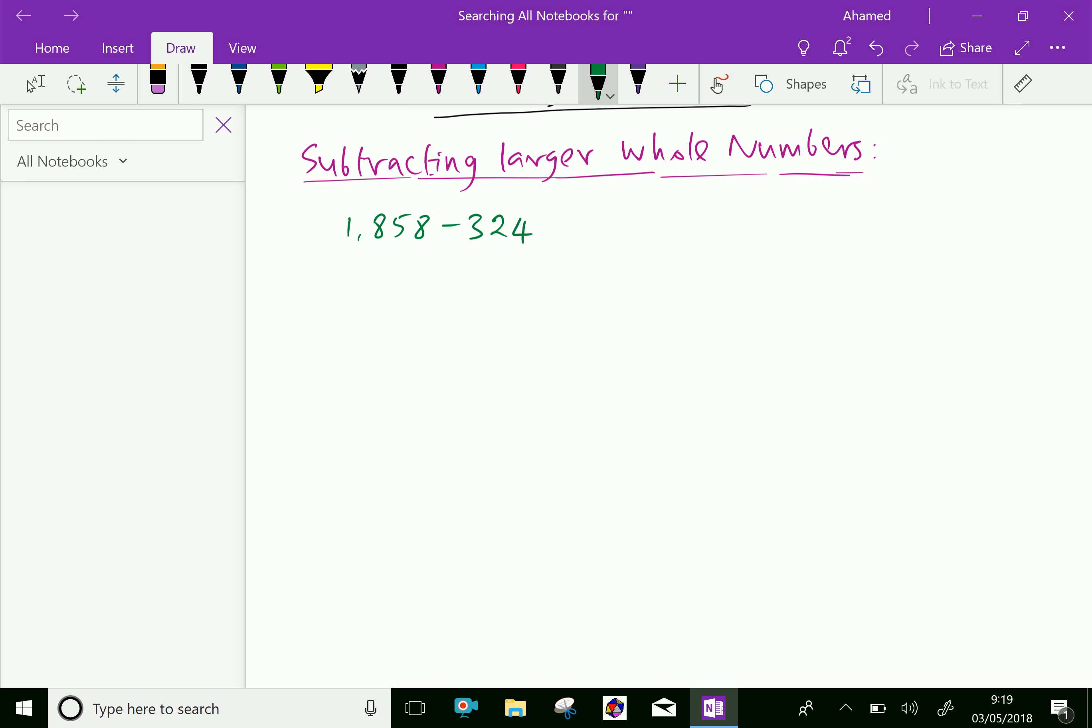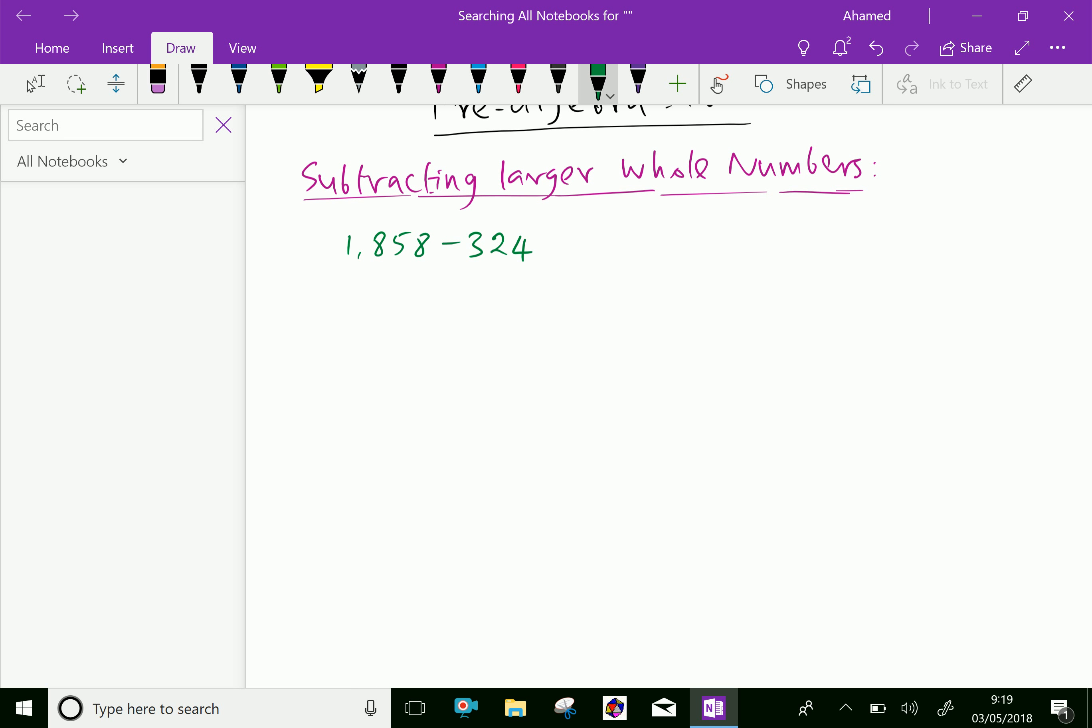Here, let us first rewrite these numbers like 1,858. Now align vertically the second number matching from the last digit, right to left: 324. Now we will subtract here.